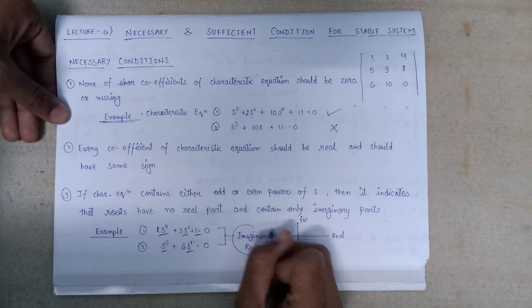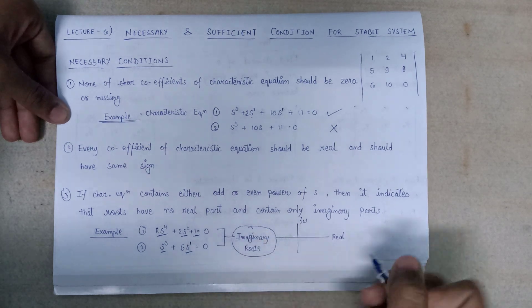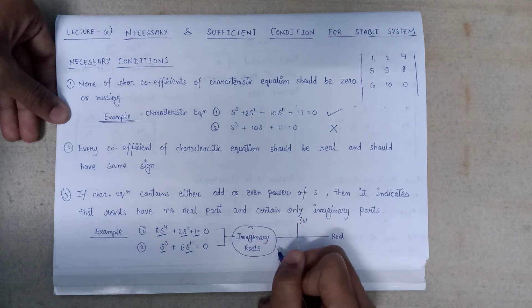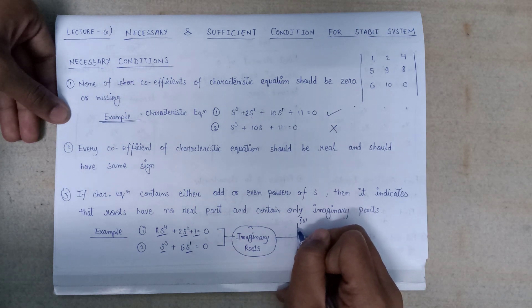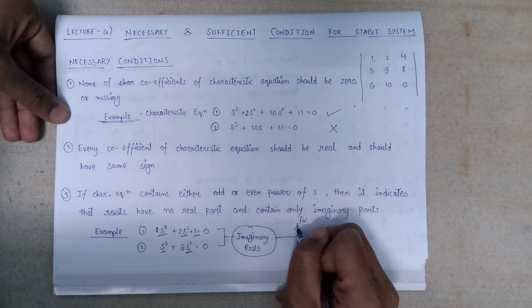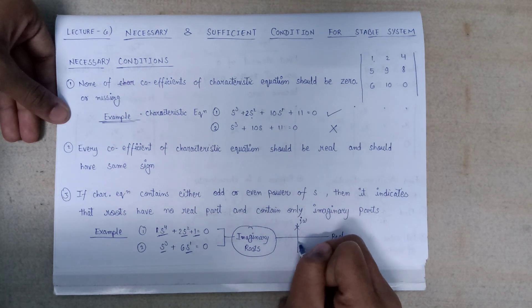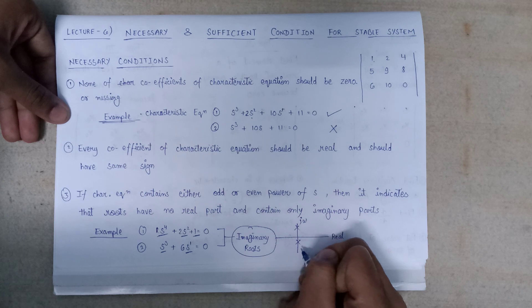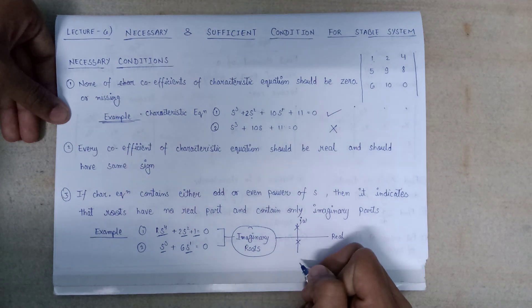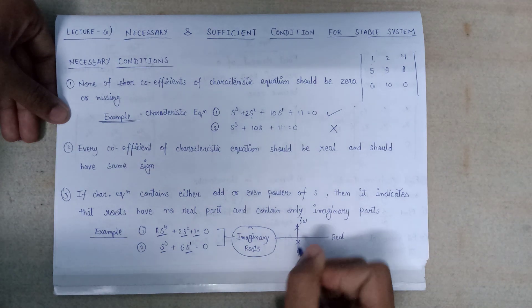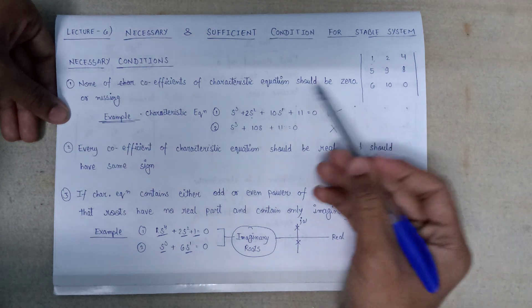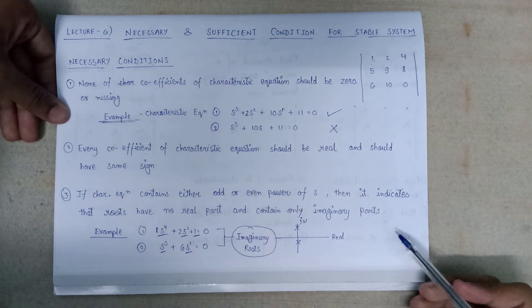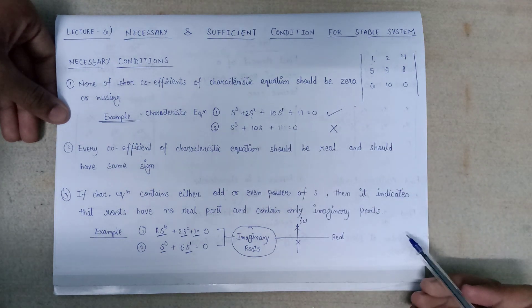These imaginary roots can only be plotted on the j-omega axis. This covers all the necessary conditions that should be satisfied for a system to be stable.